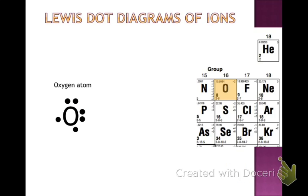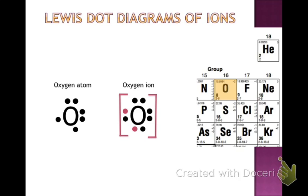Now we'll do oxygen. Oxygen is in group 16 and can gain 2 electrons. When it gains 2 electrons, we show the oxygen ion — the black ones are the original electrons, and the red ones are those transferred or given to oxygen. Just like with calcium, we put brackets around it and show the charge. Since we gained 2 electrons, we gained 2 negative charges, giving a negative 2 charge.